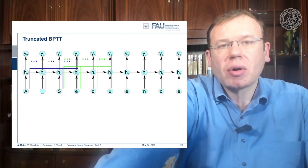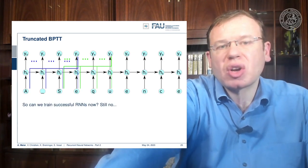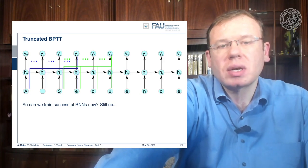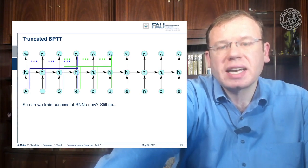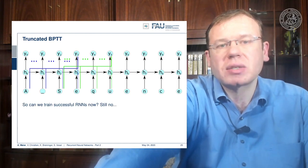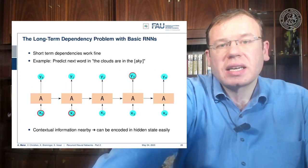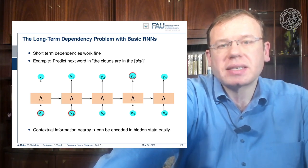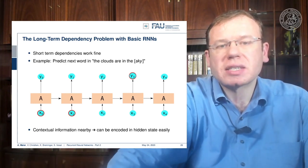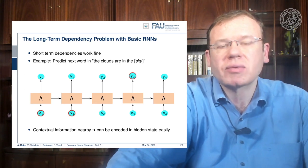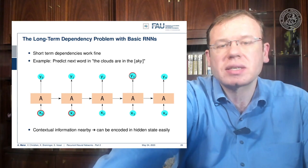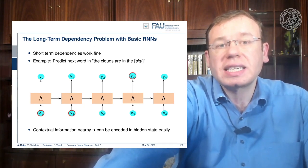Does this solve all our problems? No, because if we have a very long temporal context it will not be able to update. If the first element is responsible for changing something in the last element of the sequence, they will never be connected, so we cannot learn these long temporal contexts. This is a huge problem with long-term dependency in basic RNNs. For example, to predict the next word in 'the clouds are in the sky,' the clouds are a relevant nearby context that can be encoded in the hidden state rather easily.